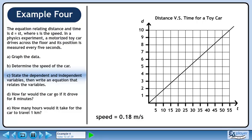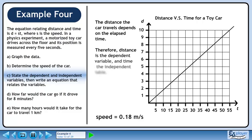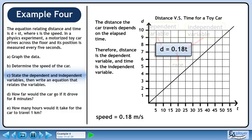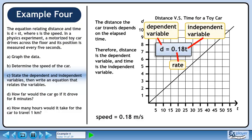In part c, we'll state the dependent and independent variables, then write an equation that relates the variables. The distance the car travels depends on the elapsed time. Therefore, distance is the dependent variable and time is the independent variable. The equation that relates the variables is d equals 0.18t. The dependent variable goes on the left of the equals sign and the independent variable goes on the right side. The rate is 0.18 meters per second.